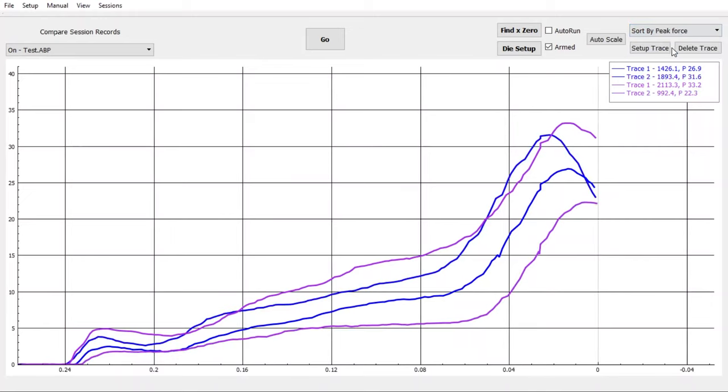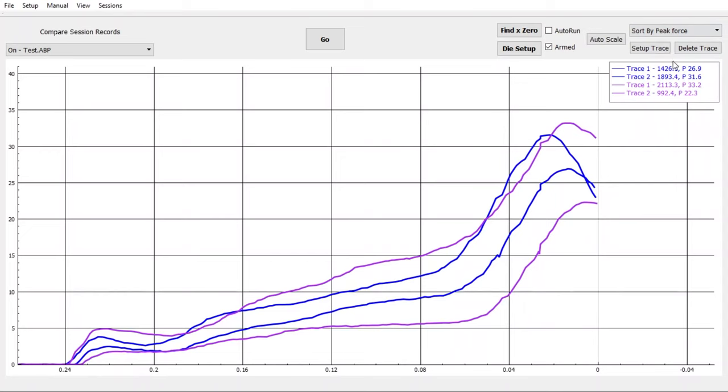You can arrange the plots by either peak force or work done. For example, if I arrange by peak force, it'll automatically change the legend to display the one with the highest peak force first, then the one with the second highest peak force second, and so on. That allows you to batch your ammo accordingly.